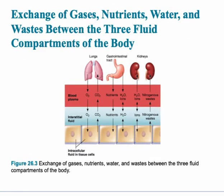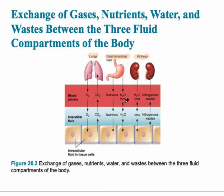This slide shows all the fluid compartments in the body and how exchange happens between the lungs, the GI tract, and the kidneys. In the case of the lungs, oxygen diffuses from the alveoli into the blood and is eventually transferred into the tissues. In the gastrointestinal tract — primarily the small intestine — nutrients enter into the bloodstream and then into the tissues, and water and ions also move into the blood. In the case of the kidney, water and ions enter the urine so the body gets rid of them, as does nitrogenous waste.